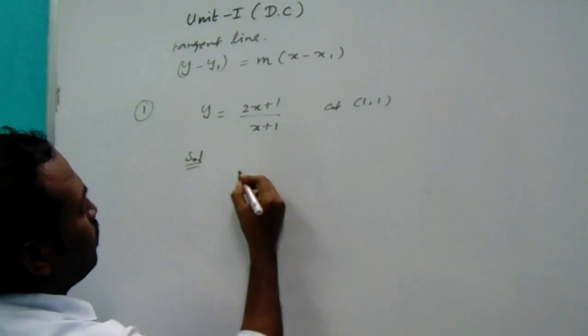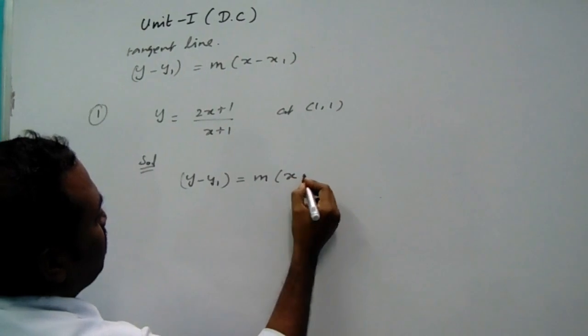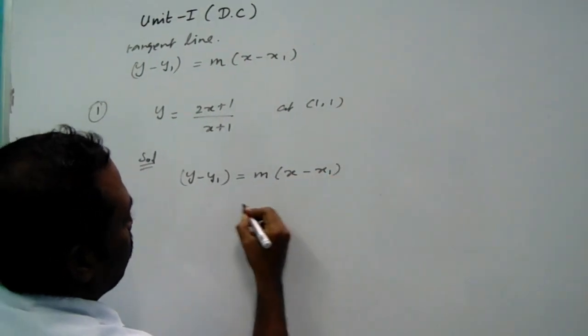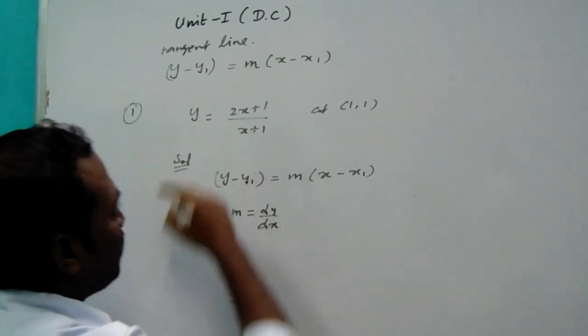What is the M? What is the formula? y minus y1 equal to M into x minus x1. What is the M? M is the slope. M is the slope means it is dy dx. Only you have to differentiate this single time.